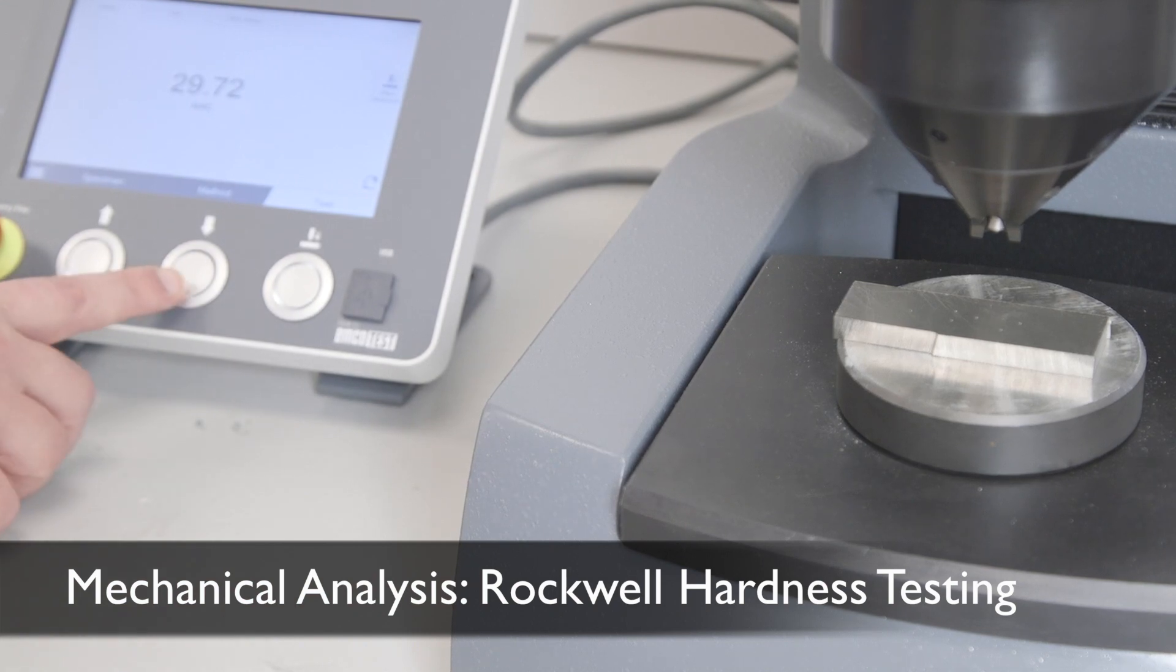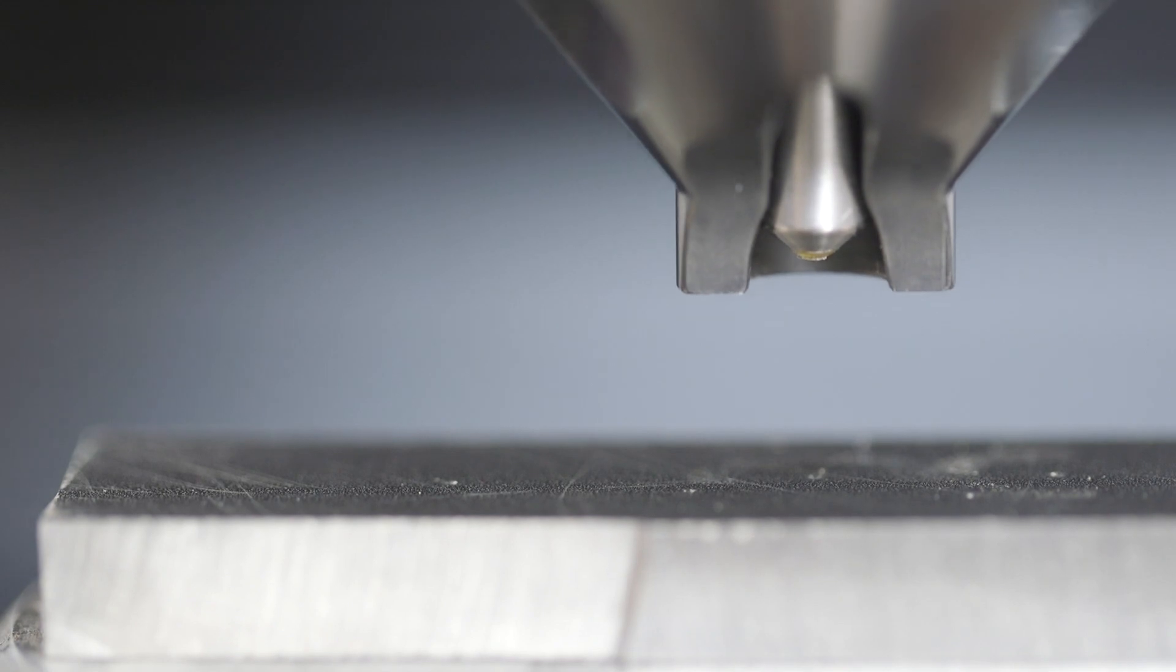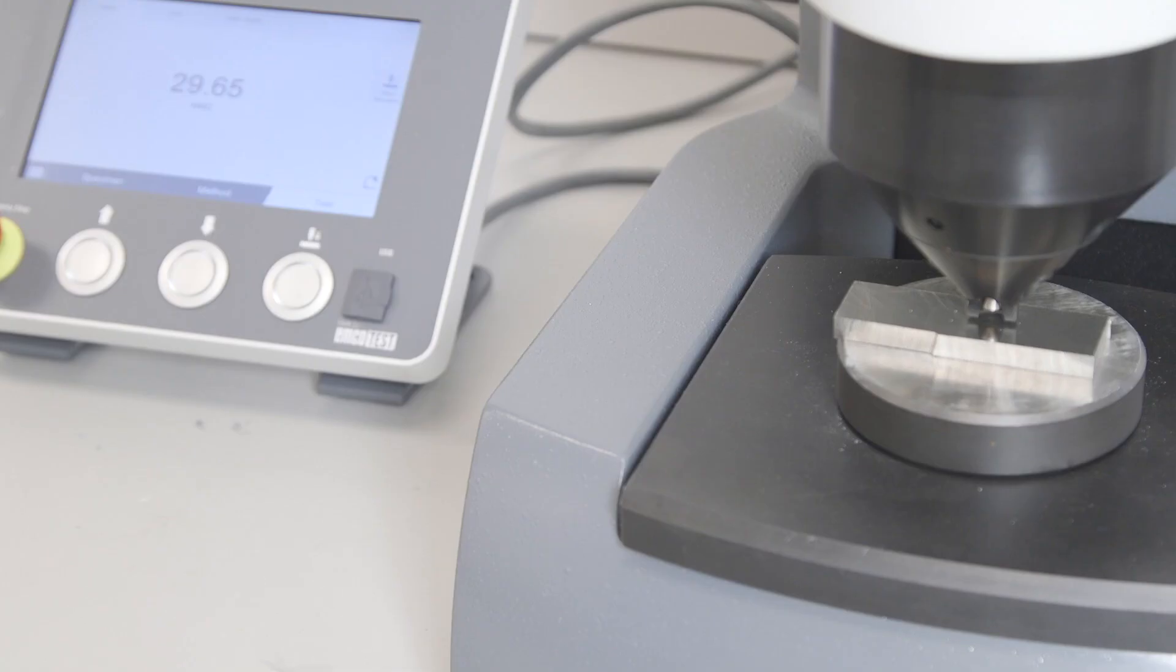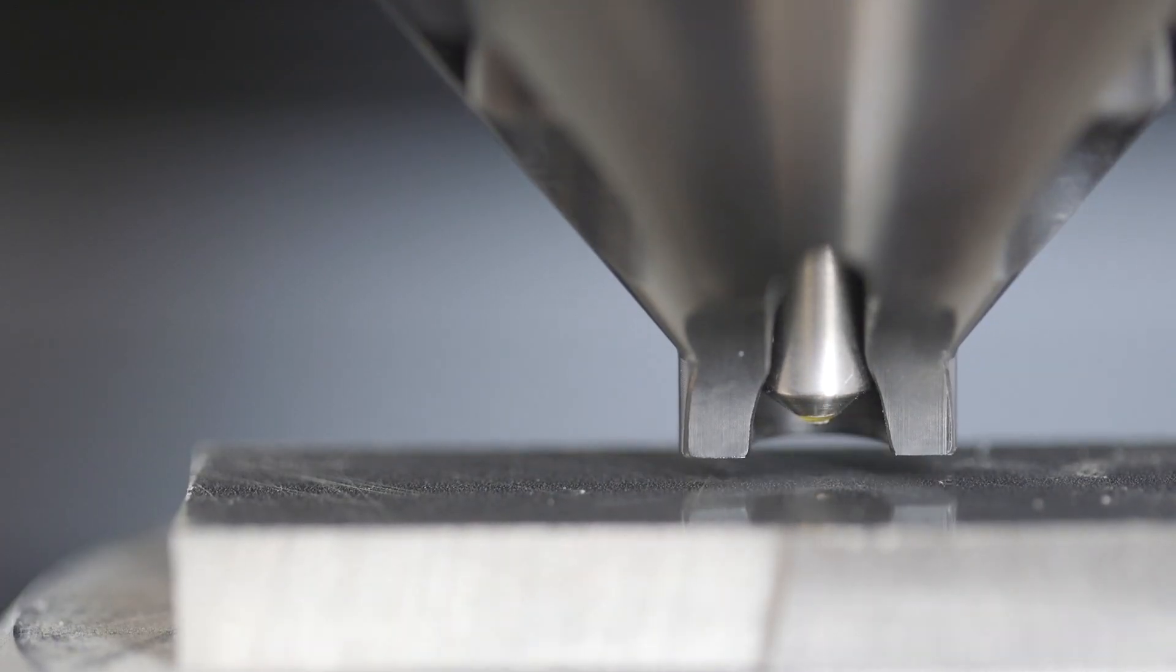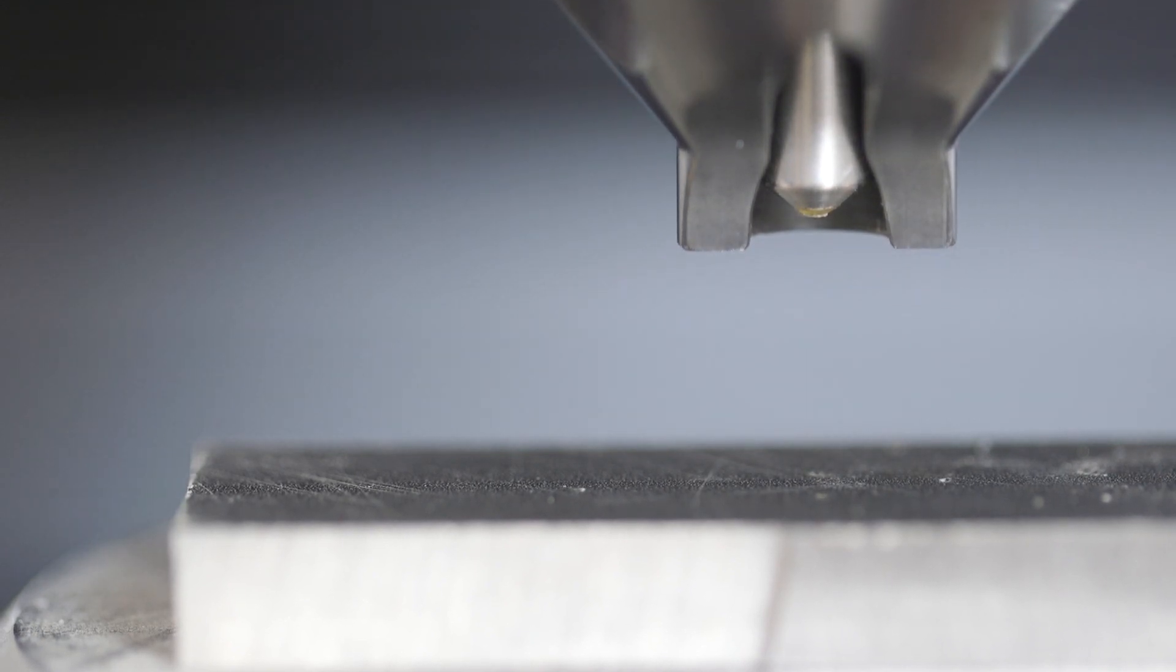Here we are performing the Rockwell hardness testing. It is a macro test to quantify the relative hardness of materials. It uses a diamond tip with a certain load and measures the indentation depth into the materials to distinguish the hardness of the materials.